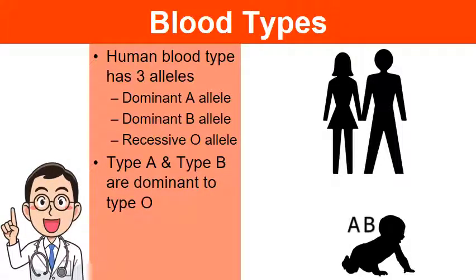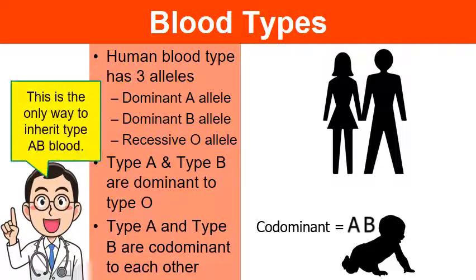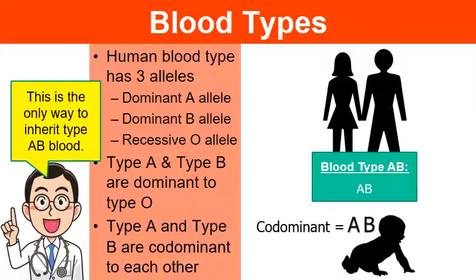If a person receives a dominant A allele from one parent and a dominant B allele from the other, this is the codominant blood type — blood type AB. Type A is dominant, type B is dominant, and they are codominant. This is the only way to inherit blood type AB: the only genotype possible is receiving a dominant A allele from one parent and a dominant B allele from the other.